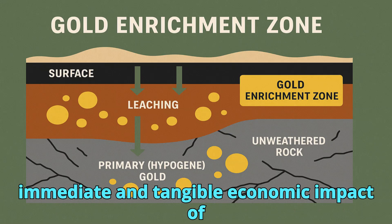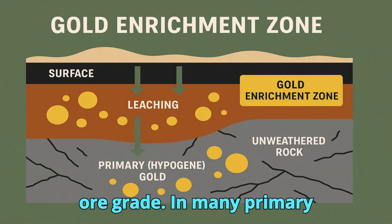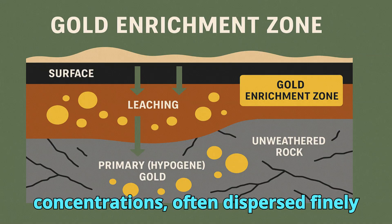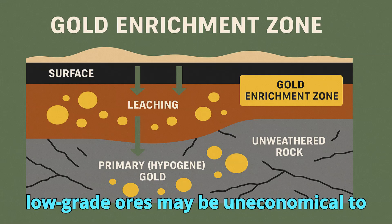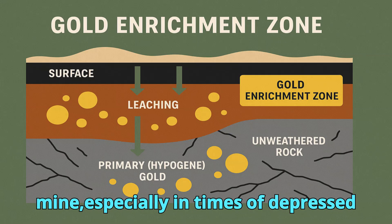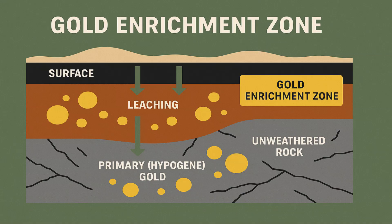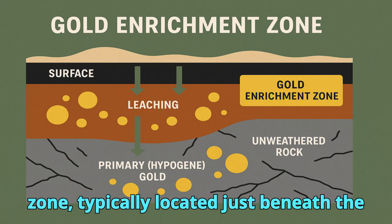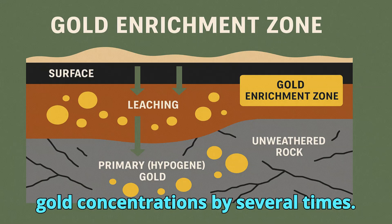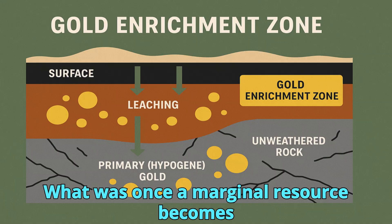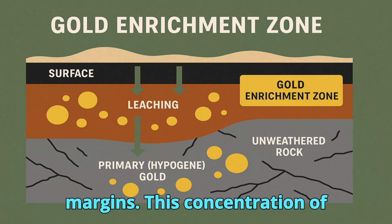The most immediate and tangible economic impact of a gold enrichment zone is the increase in ore grade. In many primary deposits, gold occurs in low concentrations, often dispersed finely within sulfide minerals. These low-grade ores may be uneconomical to mine, especially in times of depressed gold prices or in remote locations with high operational costs. However, the presence of an enrichment zone — typically located just beneath the oxidized cap of a deposit — can elevate gold concentrations by several times, transforming a marginal resource into a high-grade, near-surface ore zone capable of generating significant profit margins.